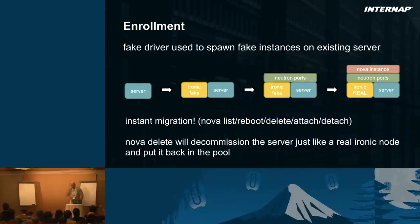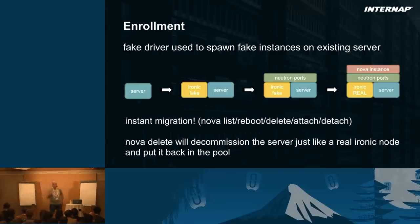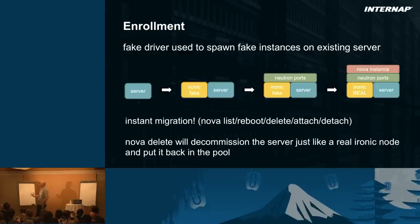I want to talk about enrollment. There's a major difference between a physical server and a virtual machine: once a server is installed, it's just a server — no security group, nothing. It doesn't matter if it was installed using Ironic or installed in 1995 with a CD-ROM. We can import or enroll existing servers into OpenStack to accelerate OpenStack as the central point of orchestration for a customer. If a customer has 100 servers already installed somehow, we can still enroll them into Ironic, and when they do Nova list, they'll see the server.